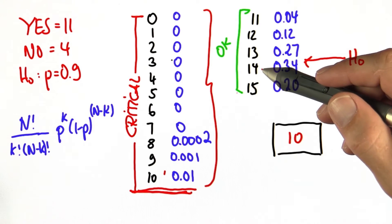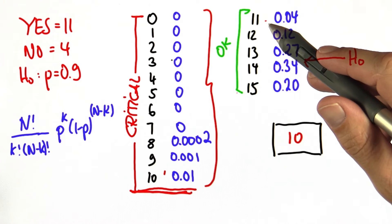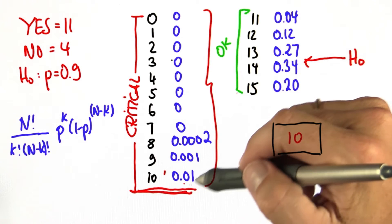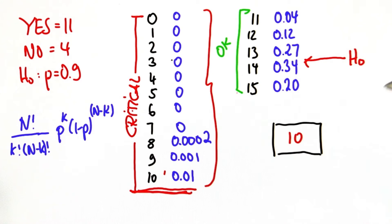And then you push this in one direction towards H1, the alternate hypothesis, until all the probabilities remaining cover 5% or less. And that's the critical region.